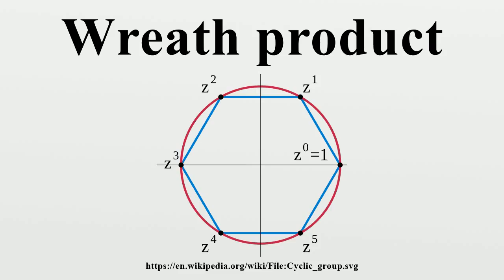Notation and conventions: The structure of the wreath product of A by H depends on the H set omega and in case omega is infinite it also depends on whether one uses the restricted or unrestricted wreath product. However, in literature, the notation used may be deficient and one needs to pay attention on the circumstances.